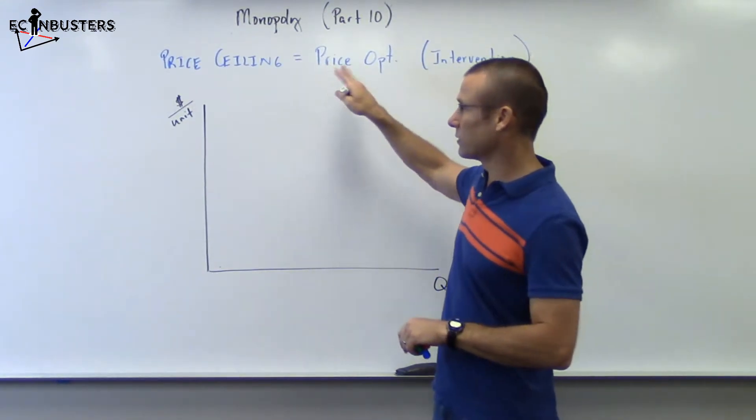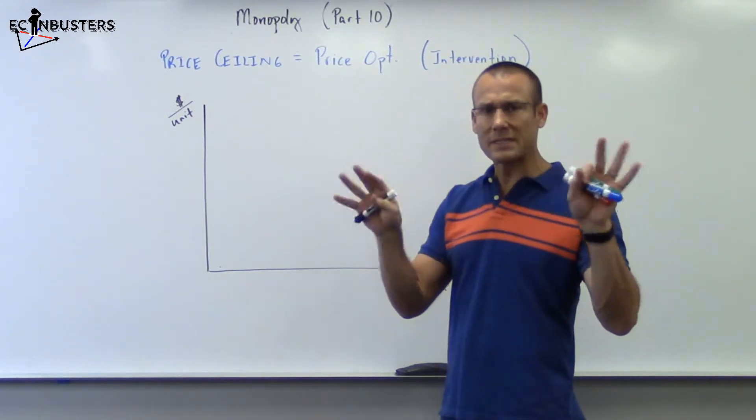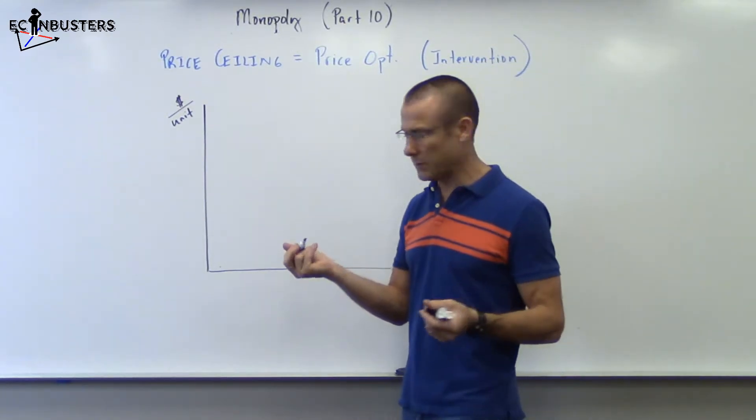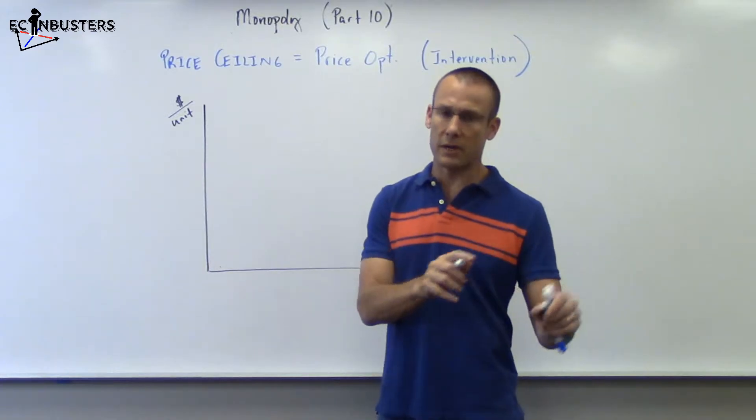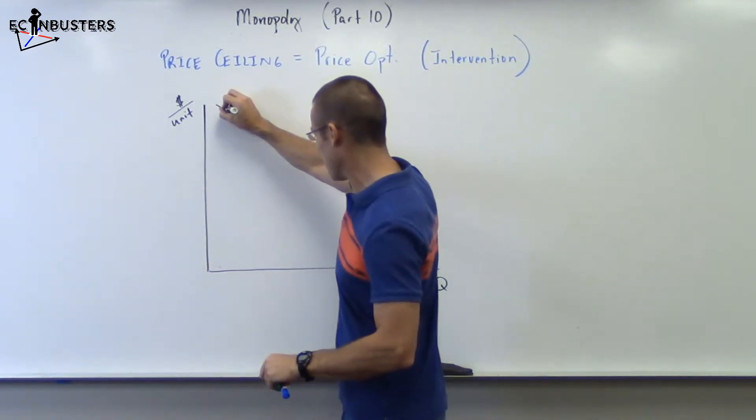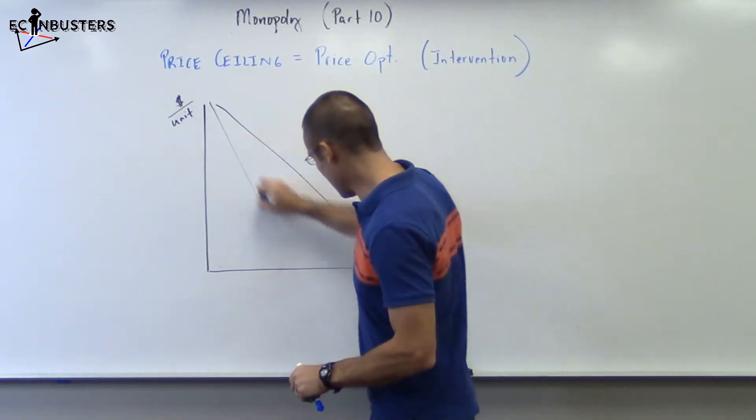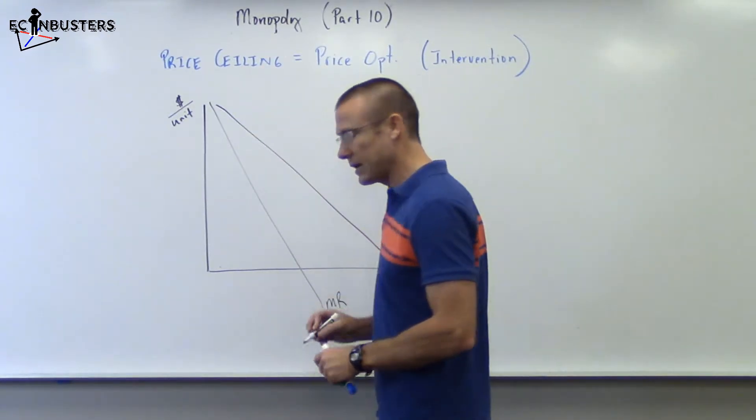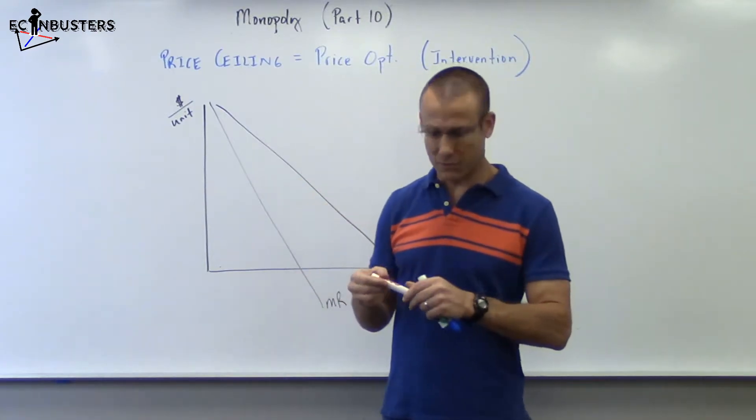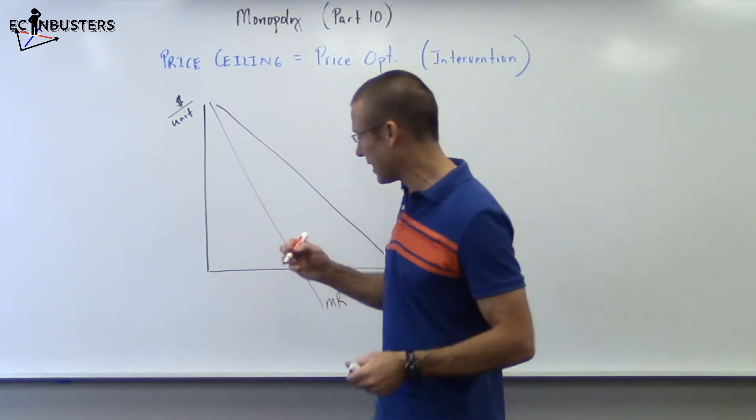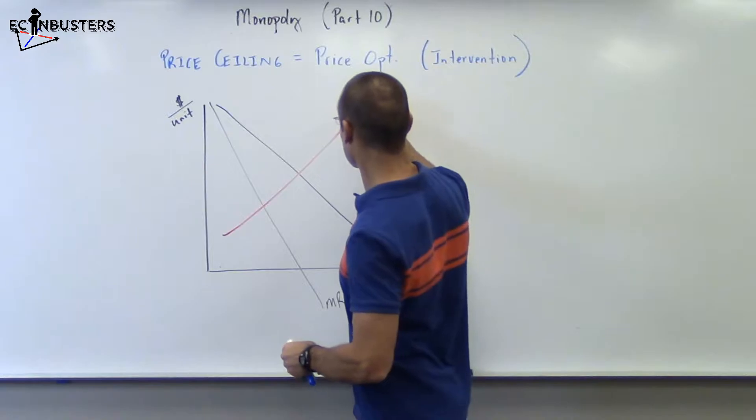We've got this monopolist operating and they're not a price discriminator, so the ban market no price discrimination. MR is going to break away at twice the slope. I've actually got my marginal cost curve right here in my hand, imagine that. So we draw the marginal cost curve, I always like that to be in red.